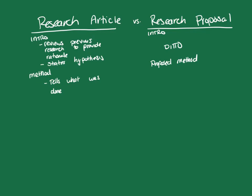The method section in a research proposal is written in future tense. Research papers or manuscripts have a results section where we state what was found and whether it supported or refuted the hypothesis. But in a research proposal, no data are yet collected, so we cannot report on results. Therefore, in a research proposal we instead have a section called the analytic strategy — there is no results section.